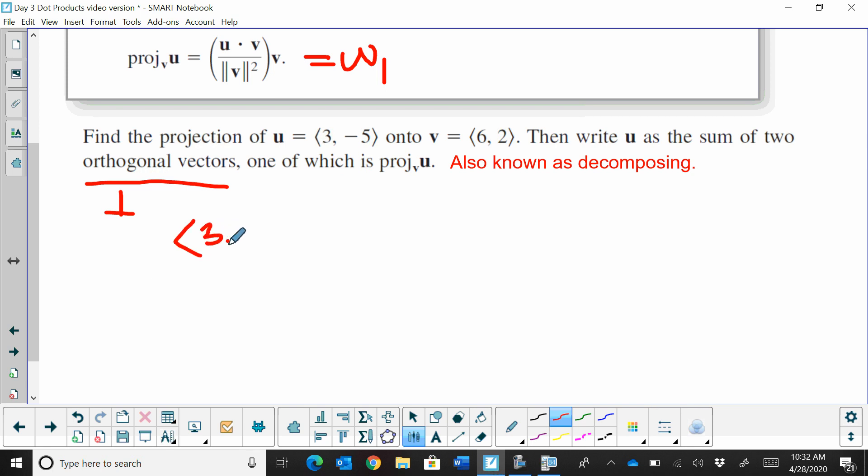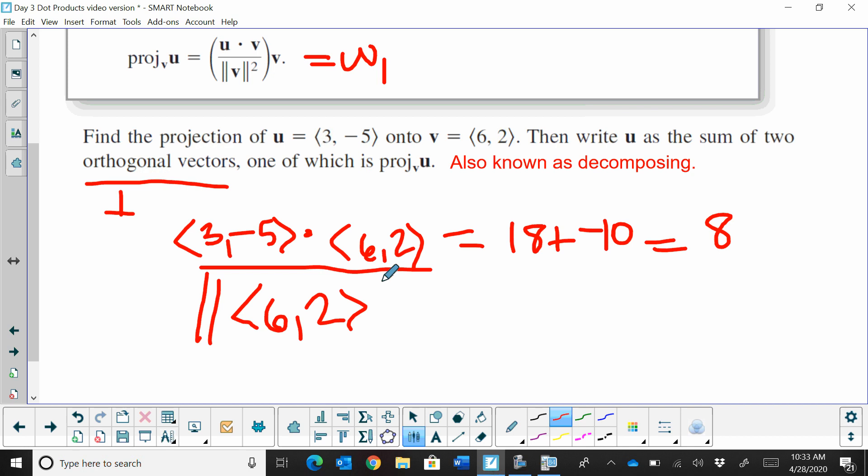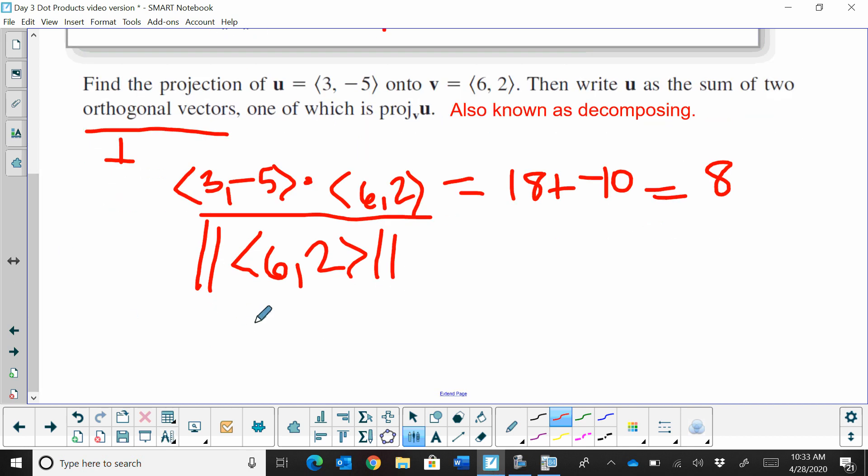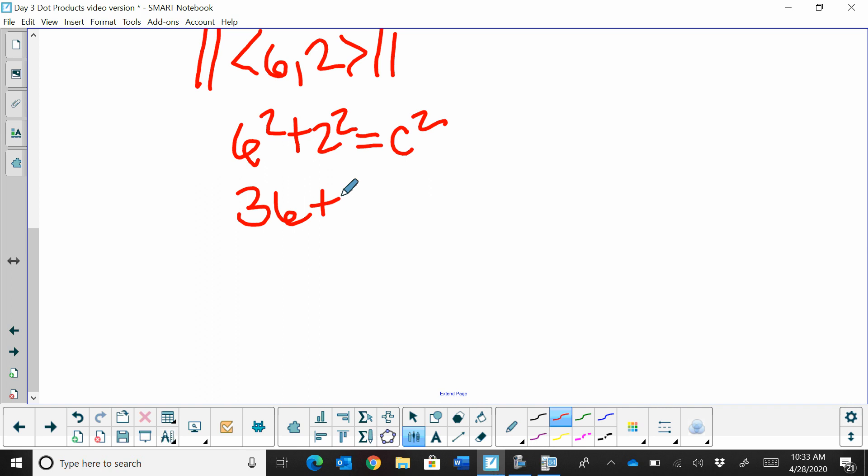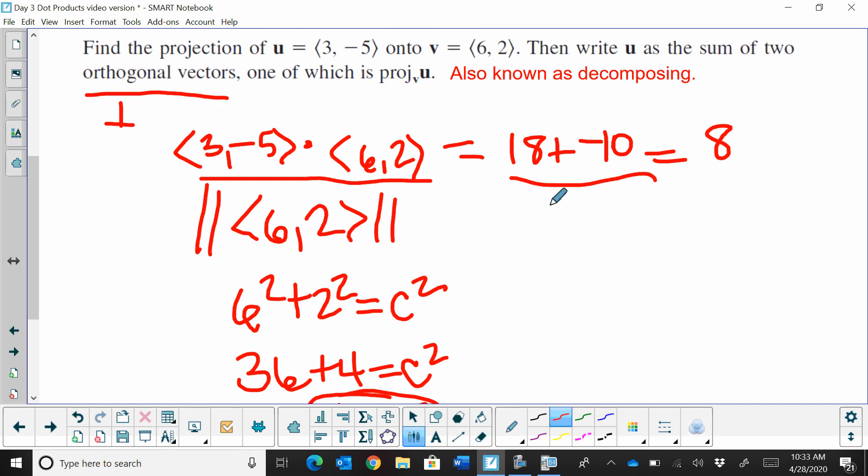We're going to take the dot product of (3, -5) times (6, 2). So that's going to give us 18 plus -10, so we end up with 8 in the numerator. And then in the denominator, we're going to find the magnitude of v and square it. v is just (6, 2). So we want to find the magnitude of that vector. First thing we're going to do is the Pythagorean theorem, 6 squared plus 2 squared, and that's going to give us that magnitude. So that's going to be 36 plus 4, and that gives us 40. Normally I would take the square root of that, but we want the magnitude squared, so we're going to stop right there. We're going to divide this by 40.